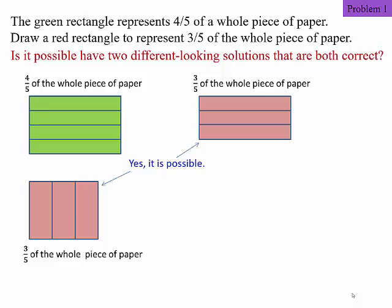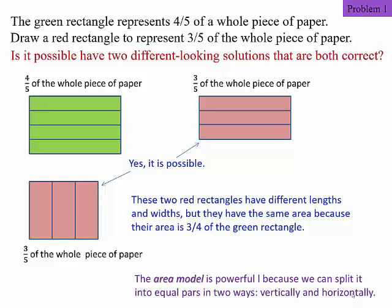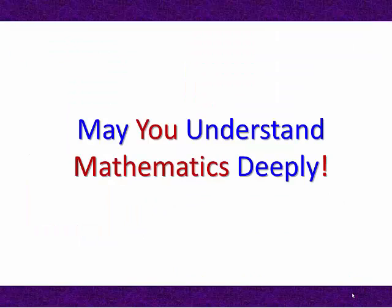So in fact, these two rectangles have the same area. And they are both three-quarters of the green rectangle, although they have different lengths and different widths. So what does this example illustrate? It helps us see that the area model is very powerful. Because we can split it into equal parts in two ways. Vertically as well as horizontally. So may you understand mathematics deeply.